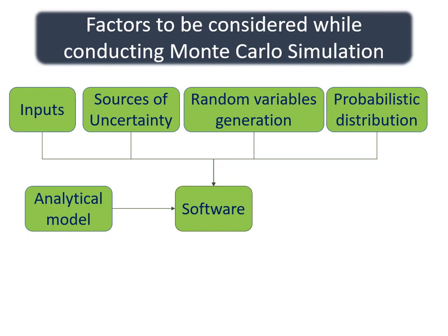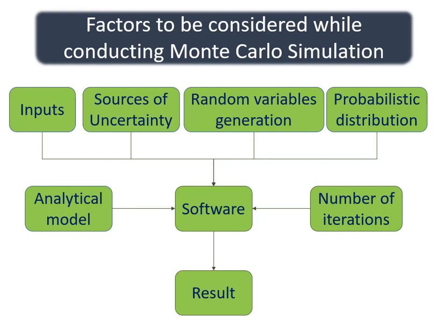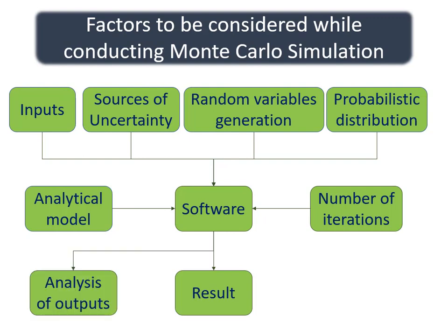For executing the simulation, a reliable and user-friendly software must be selected. There are software like MATLAB and MS Excel which can be used to conduct Monte Carlo simulation. While conducting simulations, the number of trials plays a major role and must be selected such that the output of the analysis is independent of the number of iterations. Finally, the process and depth of analysis of output must be clear and convenient to the context. The nature of parameters to be obtained in the result section is an essential part of the analysis. The efficiency of the model up to which it is accepted must also be predefined and clearly stated.